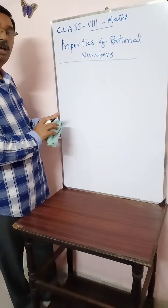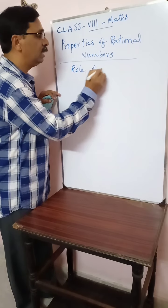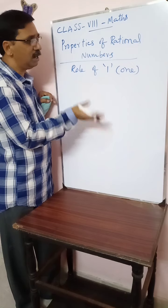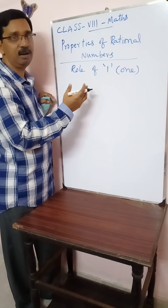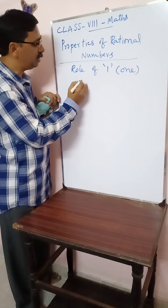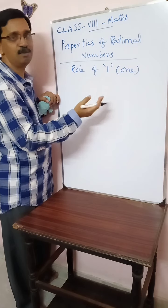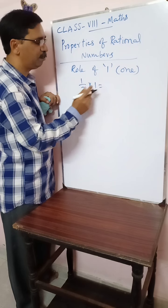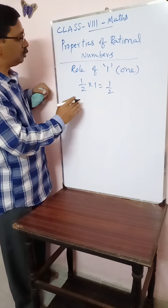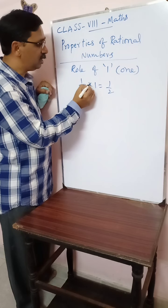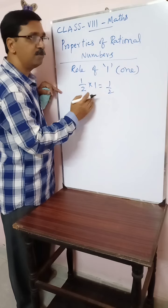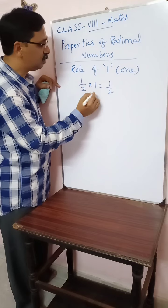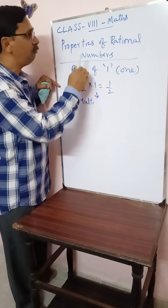Next is the role of 1. One is also a special number. Earlier we saw about addition; now let us take up multiplication. Suppose we multiply any number by 1 — the result is the same number. For example, take rational number 1/2 and multiply it by 1; the product is 1/2 itself. Multiplication by 1 has no effect. Therefore, 1 is called the multiplicative identity of rational numbers.